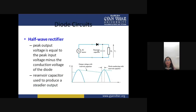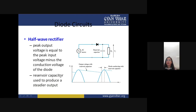Diode circuits: we have already discussed the half-wave rectifier, which uses one diode, one AC source, and a resistance. The peak output voltage equals the peak input voltage minus the conduction voltage of the diode. A capacitor called the reservoir capacitor is connected to make the output voltage steady.